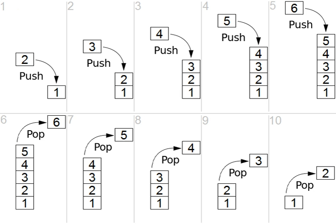All nearest smaller values - the problem of finding, for each number in an array, the closest preceding number that is smaller than it. One algorithm for this problem uses a stack to maintain a collection of candidates for the nearest smaller value. For each position in the array, the stack is popped until a smaller value is found on its top, and then the value in the new position is pushed onto the stack.